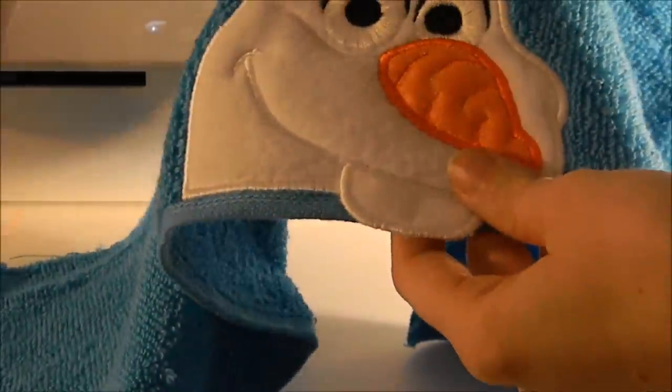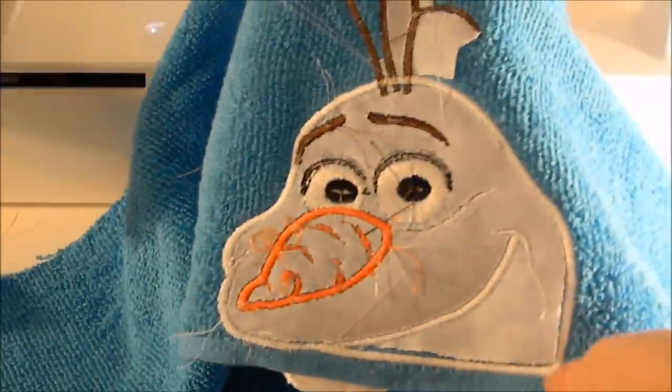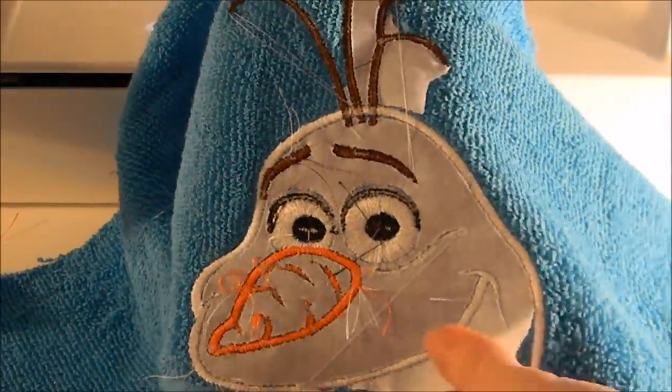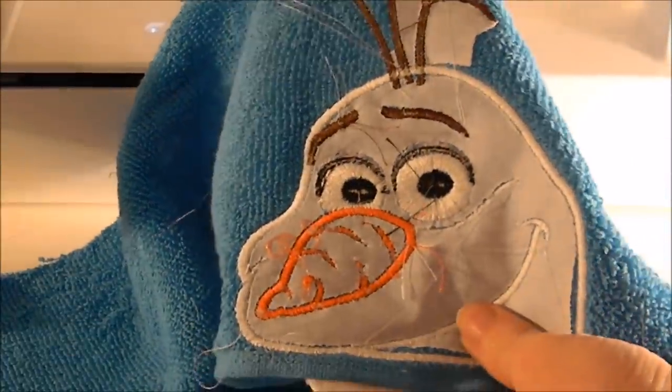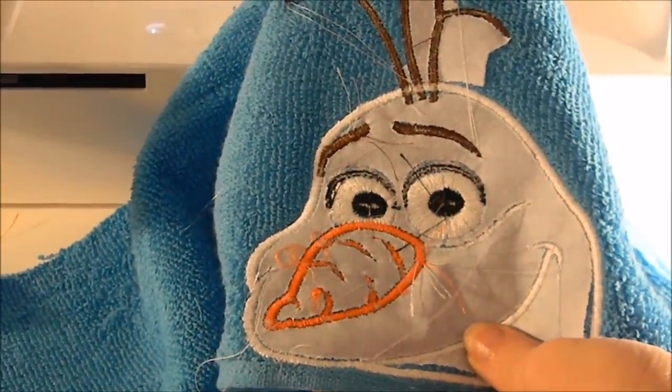What you need to do now is you need to flip him over to the back and you will want to pull away these little pieces of tear away stabilizer that are on the back and also cut the jump stitches that you see on the back.